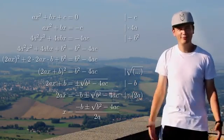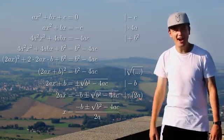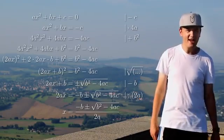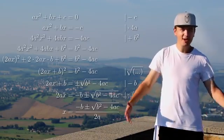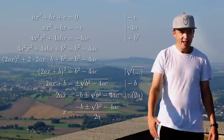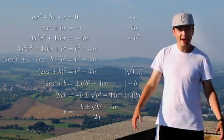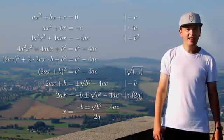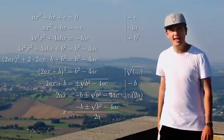And it's negative b plus or minus the square root of b squared minus 4ac over 2a. Negative b plus or minus the square root of b squared minus 4ac over 2a.